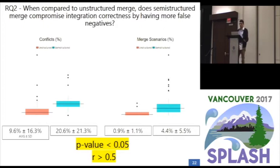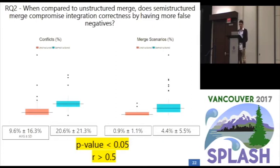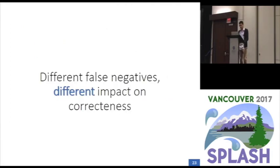To answer our second research question, we compare the number of additional false negatives of each approach. We observe that in this case, the average number of Semi-Structured Merge additional false negatives is superior to Unstructured Merge, and it also had more merge scenarios with additional false negatives. Statistical tests show the approaches present a statistically significant difference in both merge scenarios and false negatives, with a large effect size in both cases. You can also note this in the two box plots, where Unstructured Merge's third quartile is inferior to Semi-Structured Merge's first quartile. The greater the number of false negatives, the greater the number of post-merged build or behavioral errors, weakening the correctness guarantees of the merging process.